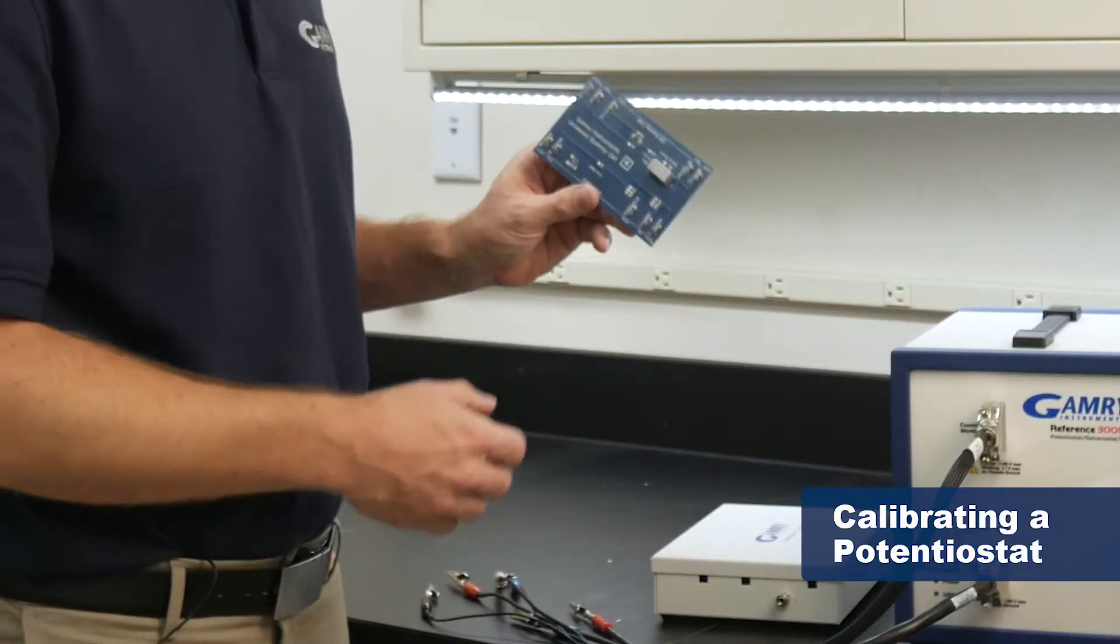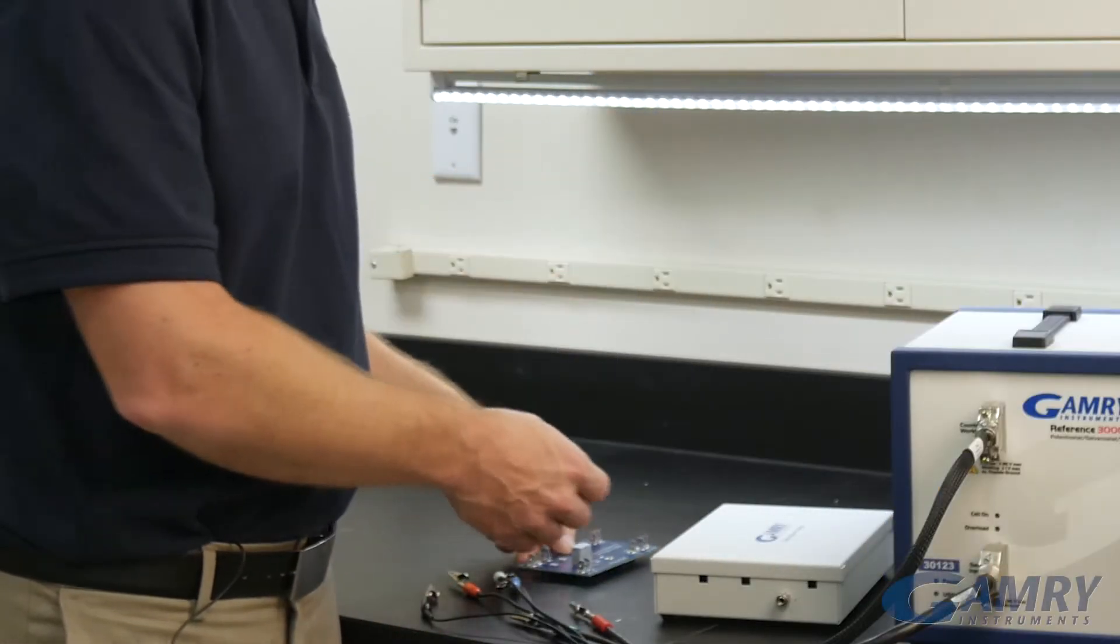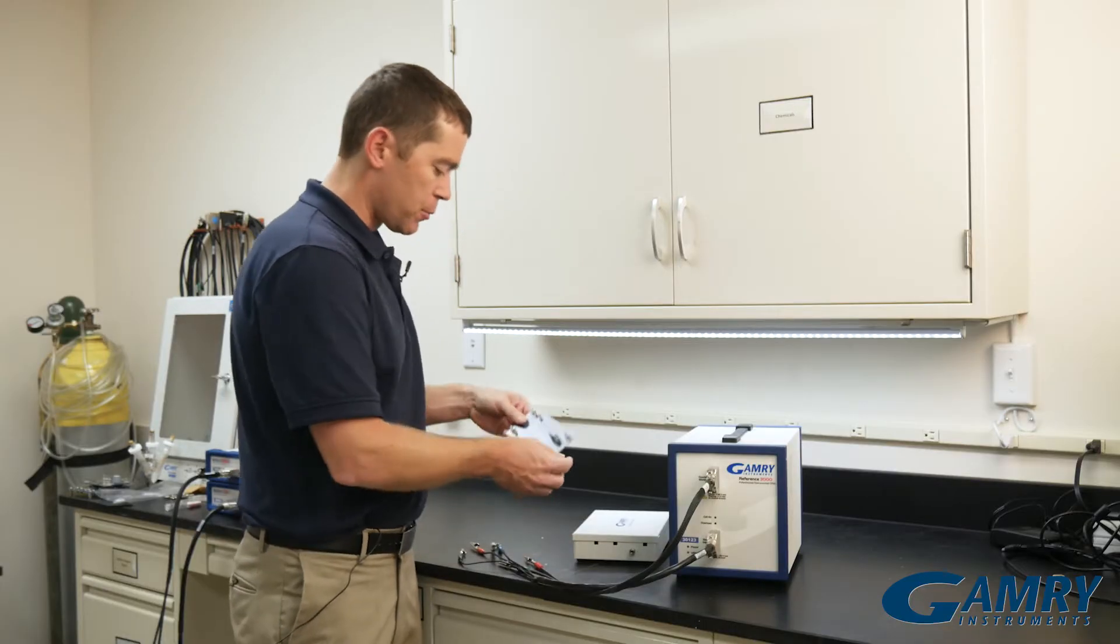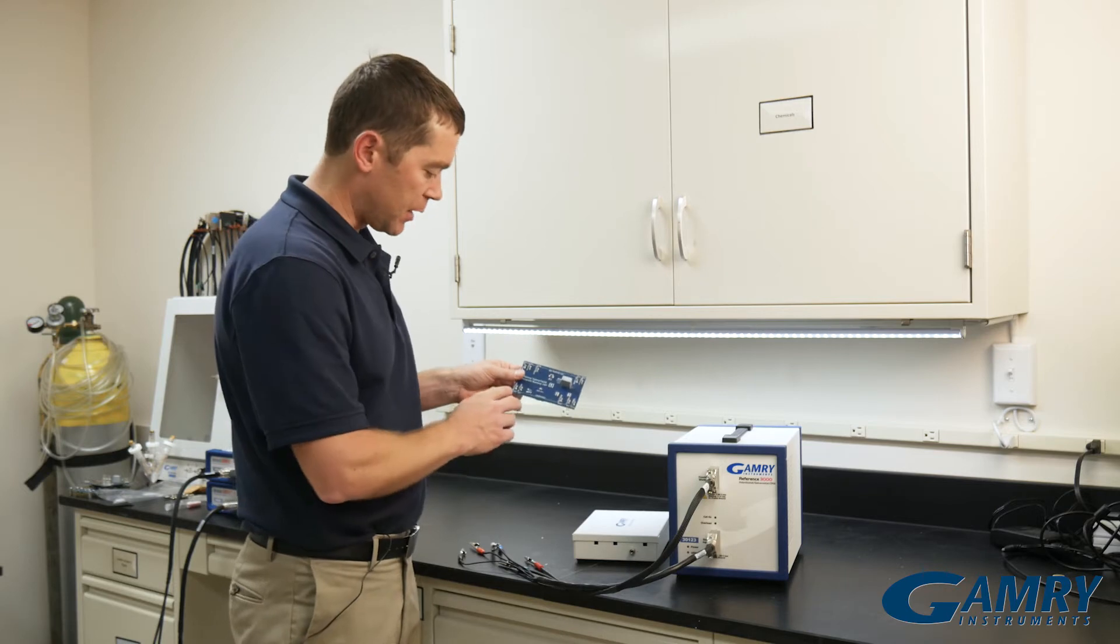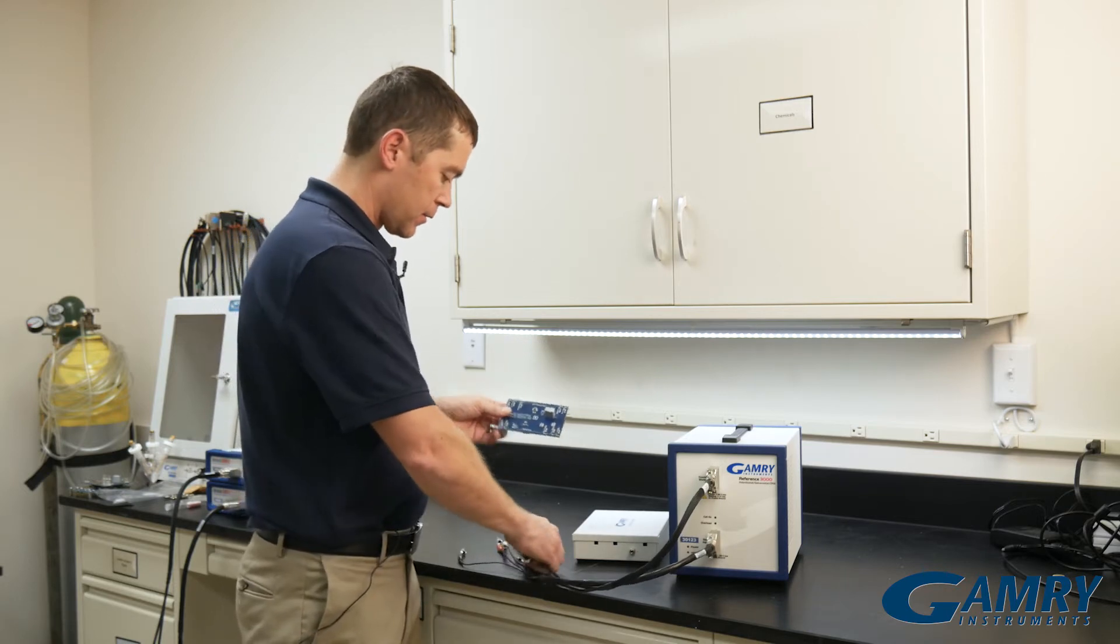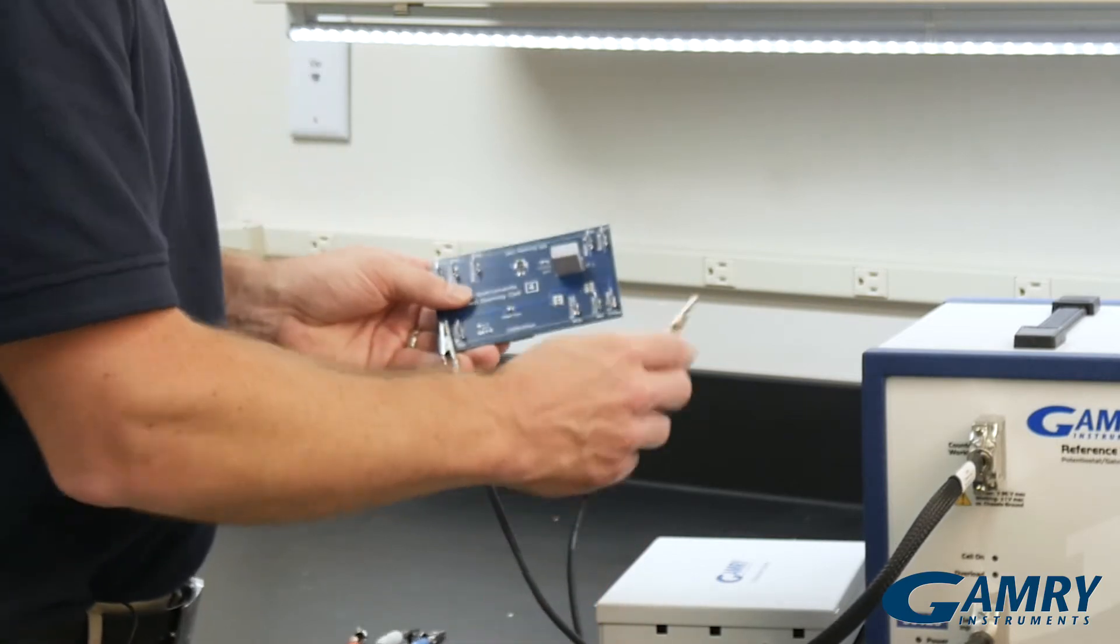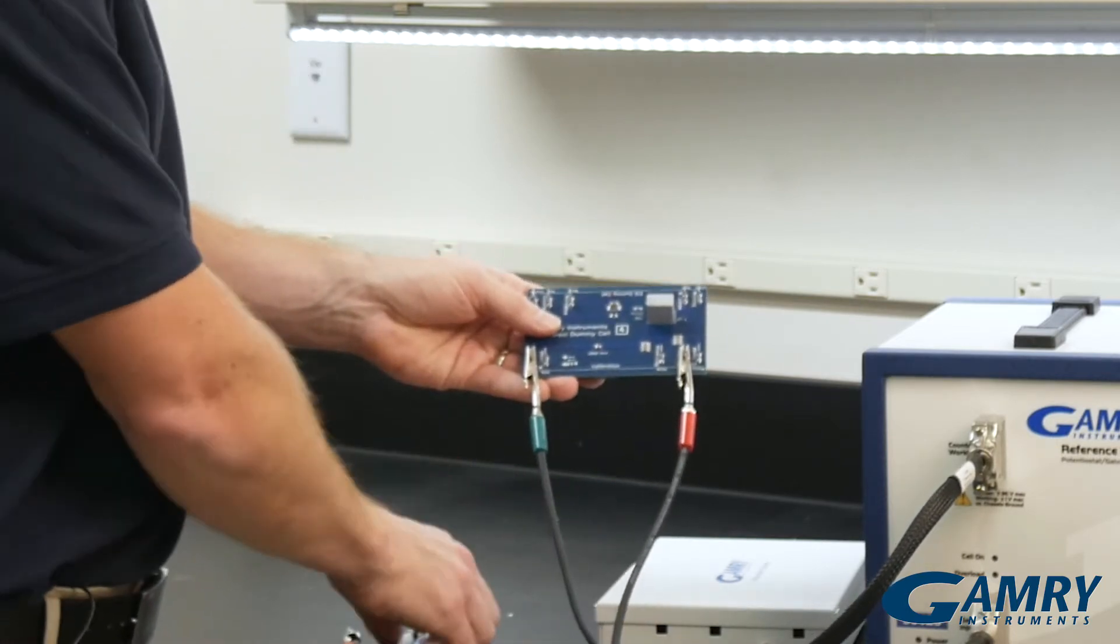All of our potentiostats come with a calibration board and a calibration shield. The calibration board tells you how to make the connections and labels them by color. So we take our cell leads and connect them up to the correct color.